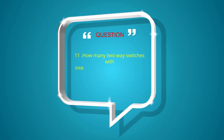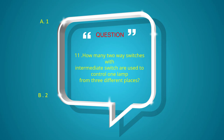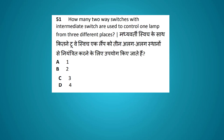How many two way switches with intermediate switches are used to control one lamp from three different places? Options: one, two, three, four. The answer is two.